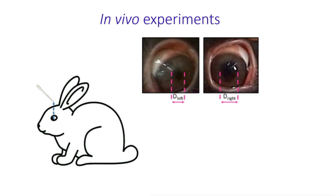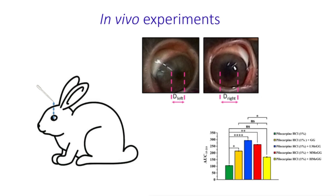The presence of unmodified gellan gum in the formulation significantly improved the efficiency of pilocarpine hydrochloride delivery. Gellan gum with a low degree of methacrylation exhibited even better performance compared to the unmodified polymer.